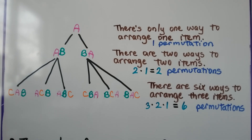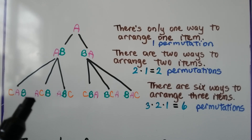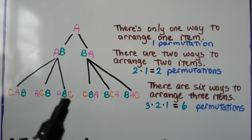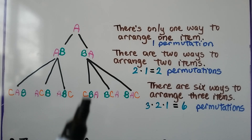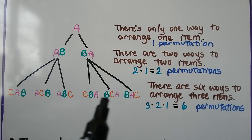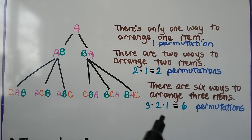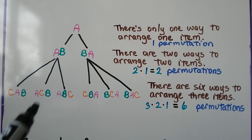If we had three items — A, B, C — there are six ways to arrange these three items. We can arrange it with C first and then A, B; we could put C in between A and B; and we can put C at the end. We can also, for B, A, put C in the front, put it in between, or put it at the end. So that's three times two times one, which is six permutations.